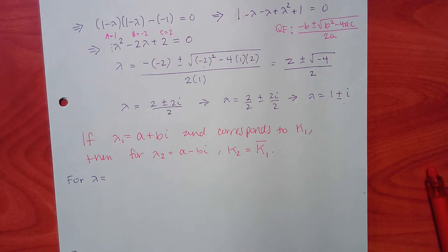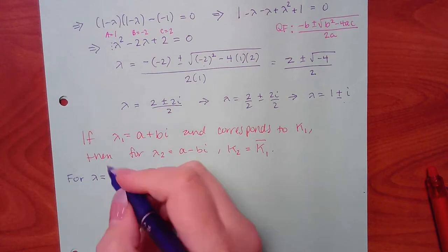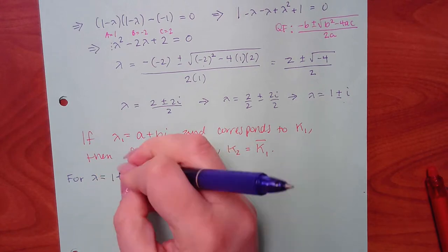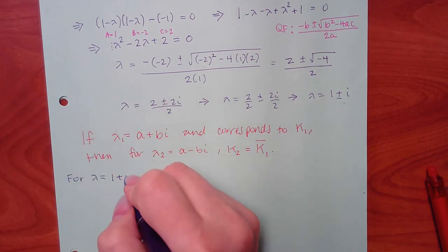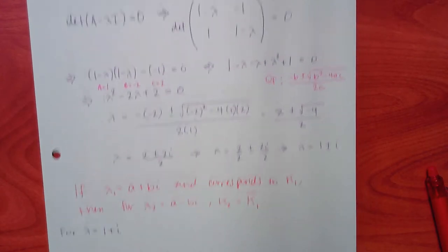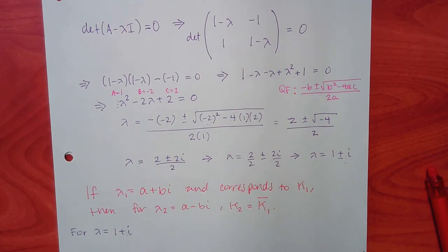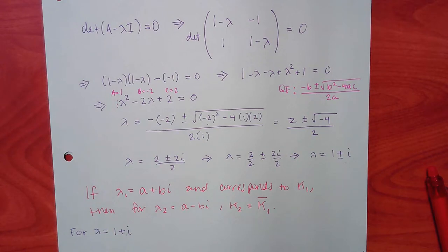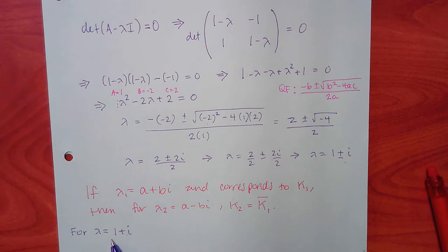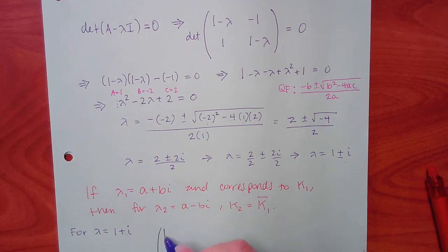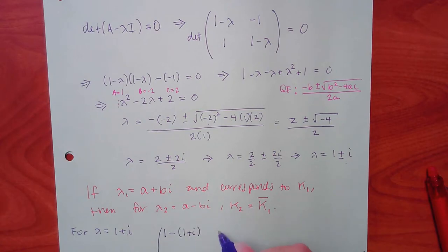Plugging lambda equal to 1 plus i into the matrix: each diagonal entry becomes the original value minus (1 plus i). Be careful — that minus sign distributes. So 1 minus (1 plus i) gives 0 minus i, which is just negative i.